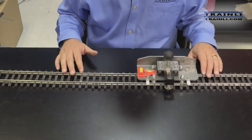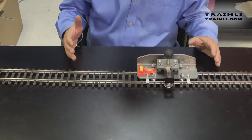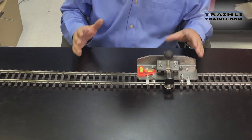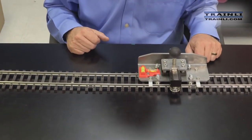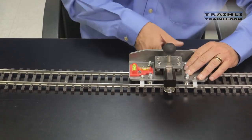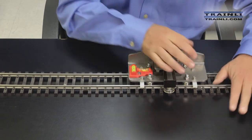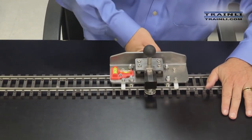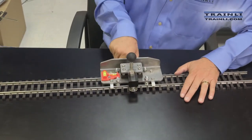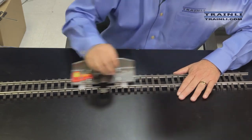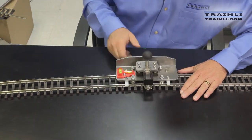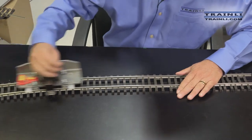Now what we want to demonstrate is how well this works on even stainless steel track. Now, for those of you that have worked with stainless steel track and tried bending those rails, they're a lot stiffer than your normal brass rail. But with the dual rail bender, it works very easily. You just crank this up, go back and forth.